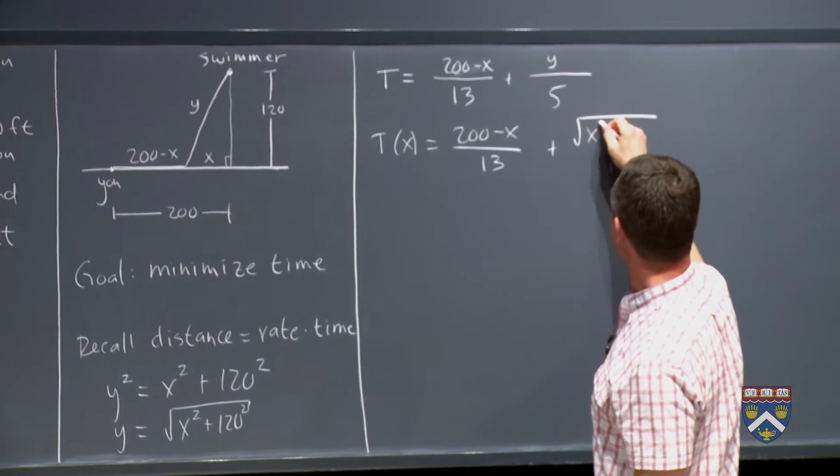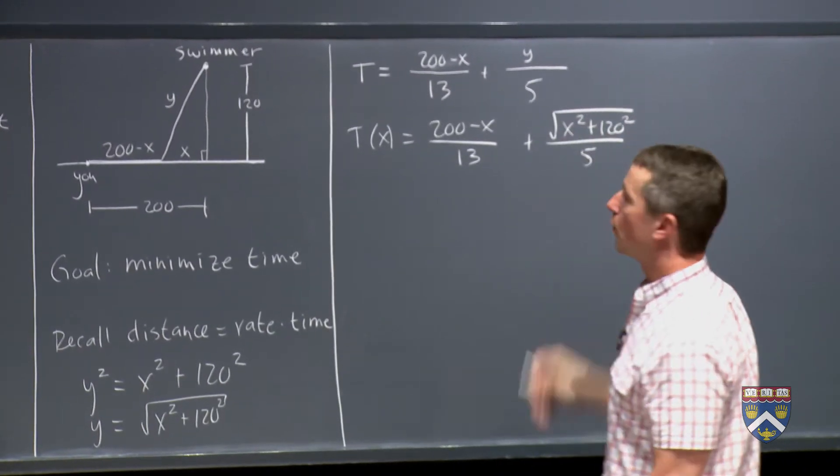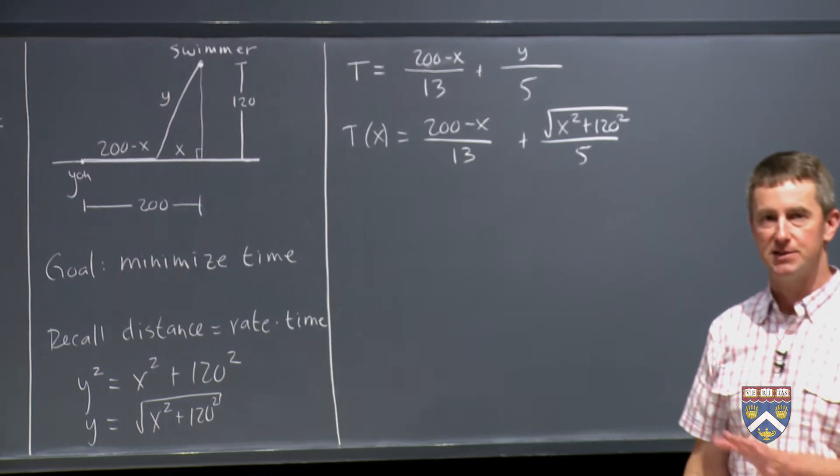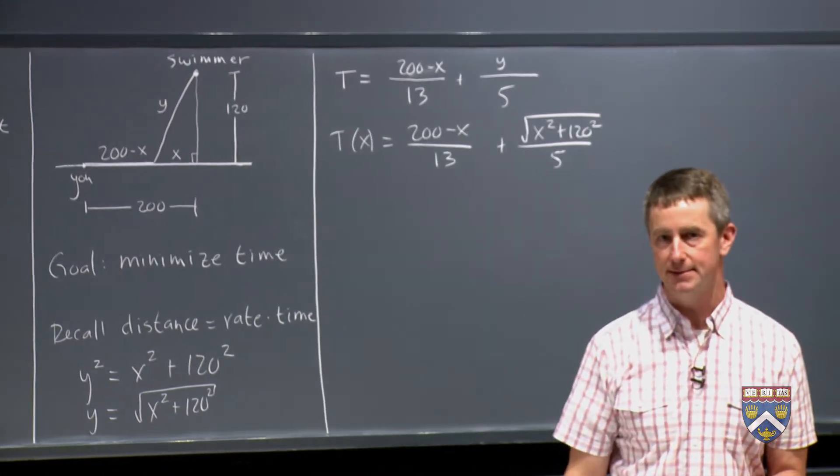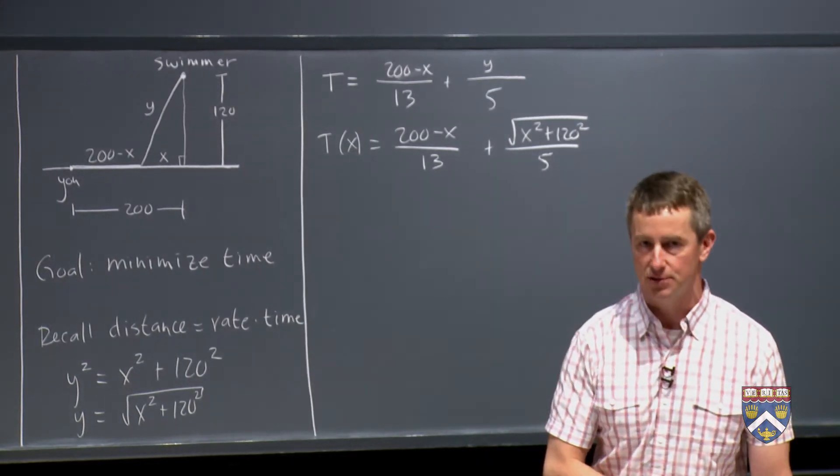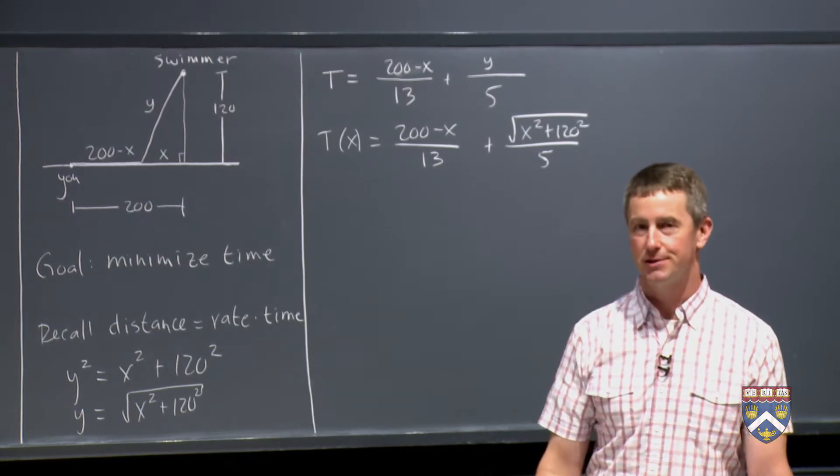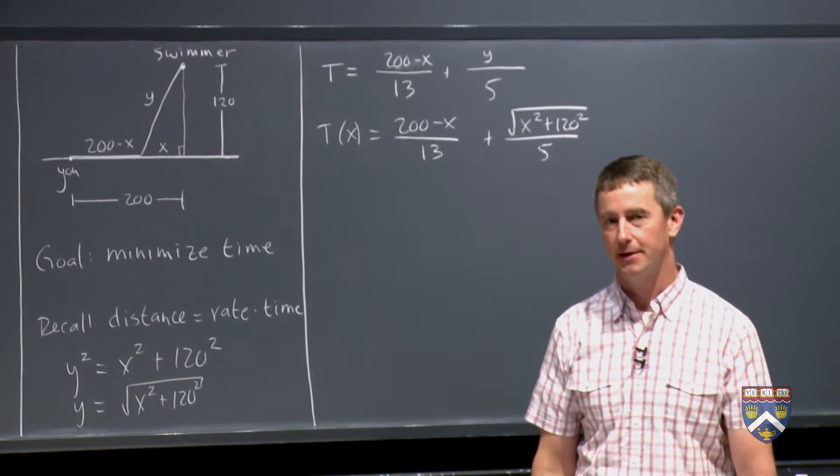By the way, for this optimization problem, we have two different applets for you. One is exactly this situation with these particular running and swimming rates. And another one, we let you play around with all sorts of different things. You can change how fast you run, change how fast you swim, change the positions. So really, I encourage you to just play around with both of those applets and explore and enjoy them.